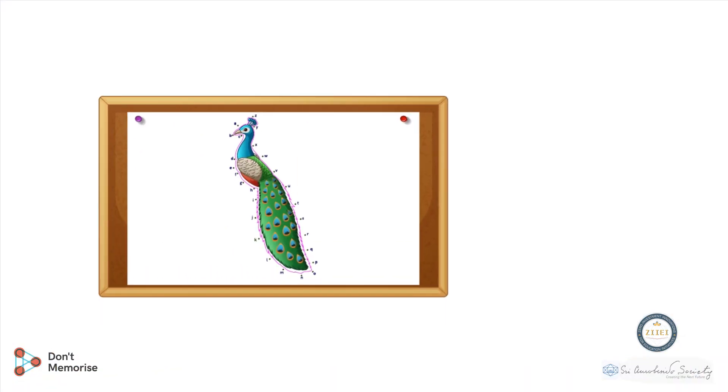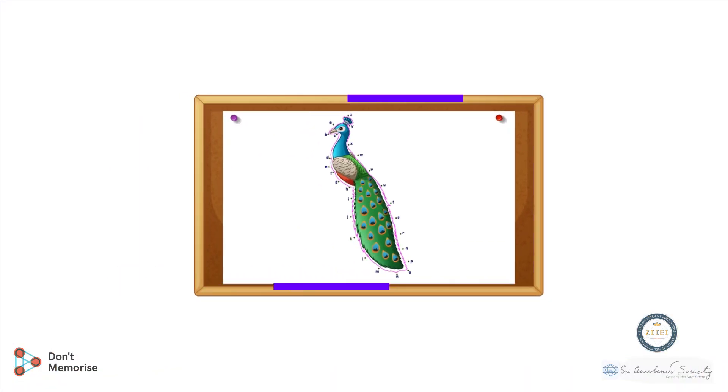A picture of a peacock pasted on a big mount board. Write the small letters from A to Z around the picture through drawing dots.